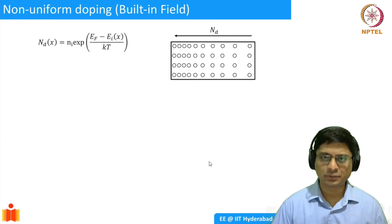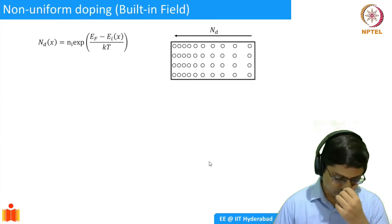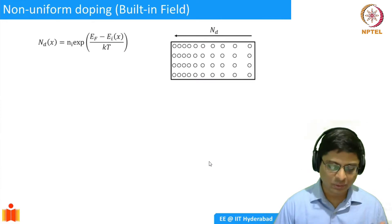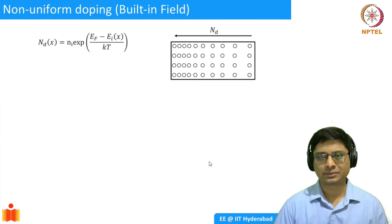If you have a simple uniform doping, you're not going to have diffusion. So here we would like to consider what happens when non-uniform doping exists.